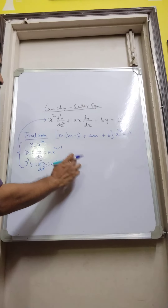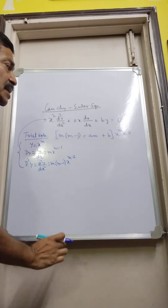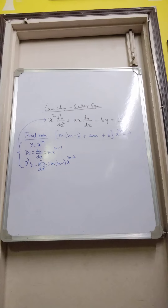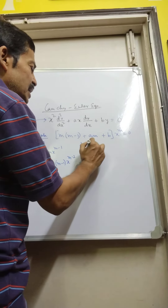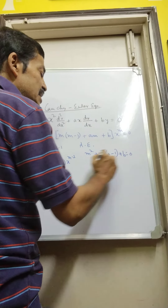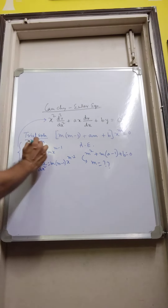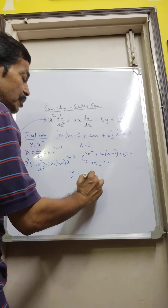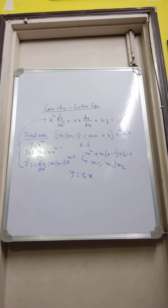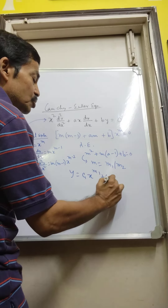So dy/dx is x^(m-1) and we multiply it with x, giving x^m. And for by, we have x^m itself. So we have the auxiliary equation: m² + m(a-1) + b = 0, which can easily be solved to find the values of m₁ and m₂. They may be real, complex, or equal roots as you all know. And we write the solution as y = c₁x^(m₁) + c₂x^(m₂).